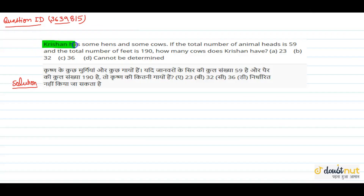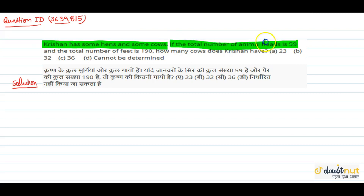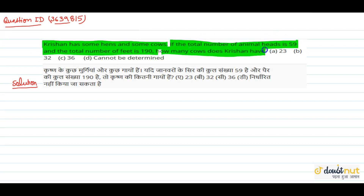Krishn has some hens and some cows. If the total number of animal heads is 59 and the total number of feet is 190, how many cows does Krishn have? We have some hens and some cows.